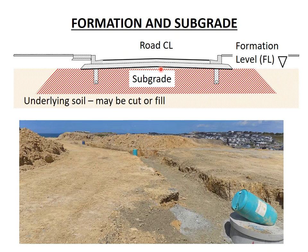The subgrade is compacted to make it stronger and better able to support the road. It is also shaped to match the shape of the final road, with the same 3% camber slope as the road surface. This means subsurface water flows away from the part of the subgrade carrying road loads — important because subgrade soils, especially clays, weaken when too wet. Having the subgrade sloping at the same camber also means the sub-base and base course layers are a constant thickness across the road, making them easier to lay and compact.